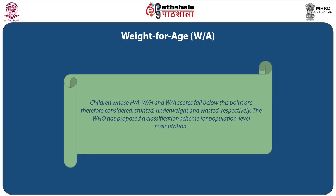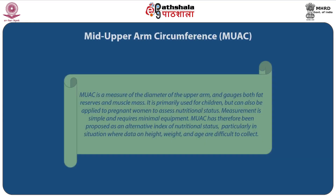The WHO has proposed a classification scheme for population-level malnutrition. Mid-Upper Arm Circumference (MUAC) is a measure of the diameter of the upper arm and gauges both fat reserves and muscle mass. It is primarily used for children but can also be applied to pregnant women to assess nutritional status. Measurement is simple and requires minimal equipment. MUAC has therefore been proposed as an alternative index of nutritional status particularly in situations where data on height, weight, and age are difficult to collect.